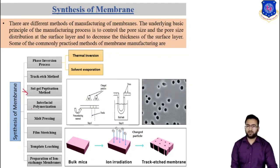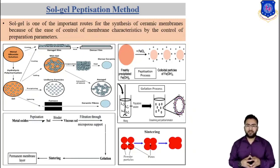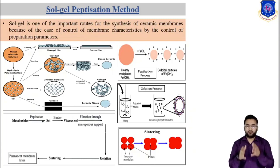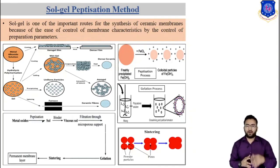Now let us discuss other methods: sol-gel peptidization method, interfacial polymerization method, and melt pressing method. In the sol-gel peptidization method, we can get ceramic membranes. Membranes made of ceramic material are considered better than organic materials because of their better chemical and radiation stability, especially in the context of treatment of radioactive effluents. Sol-gel is an important route for synthesis of ceramic membranes because preparation parameters can be easily controlled.